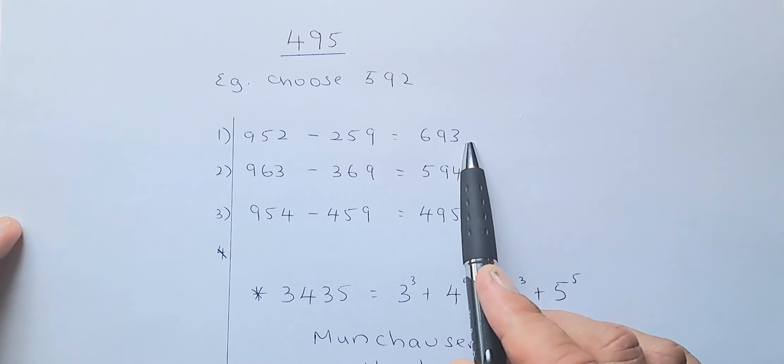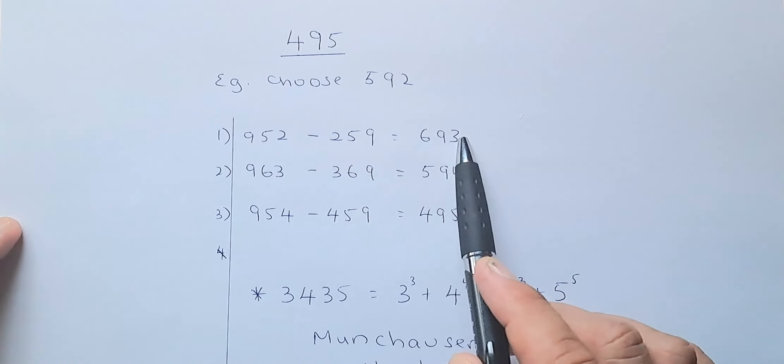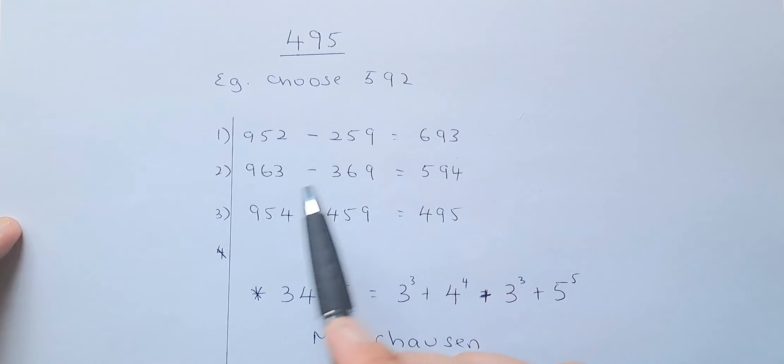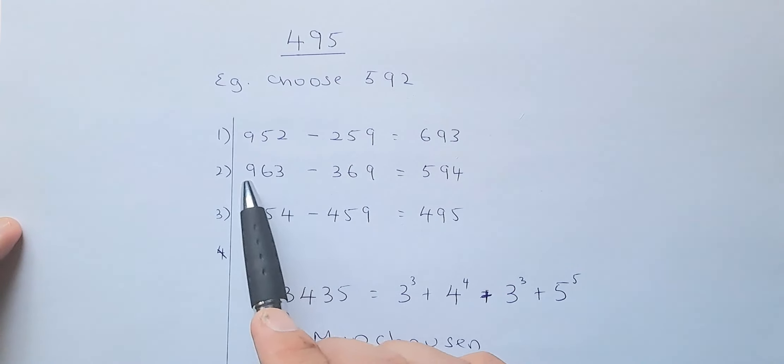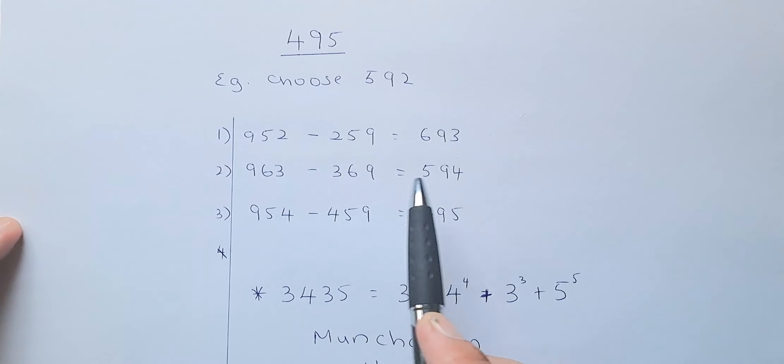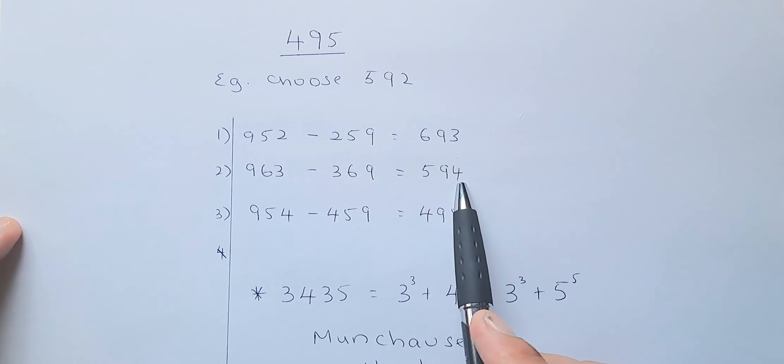Then the next step, you're going to rearrange this number from biggest to smallest, become 963, and you minus the reverse 369, which is the smallest to biggest. And the answer is going to be 594.